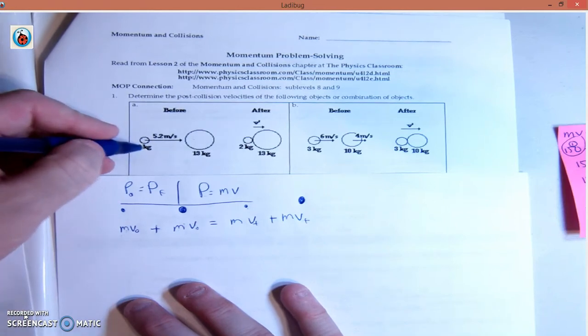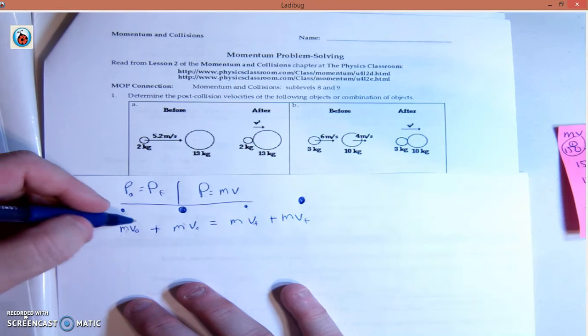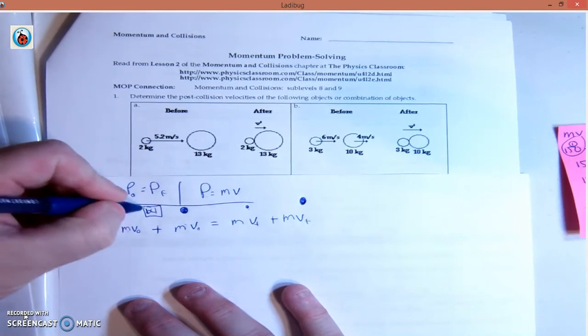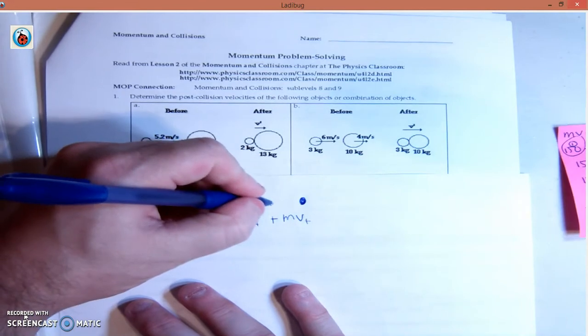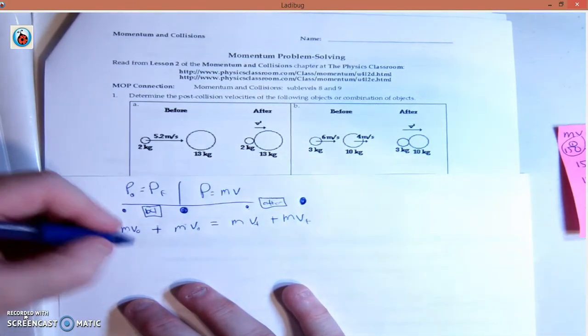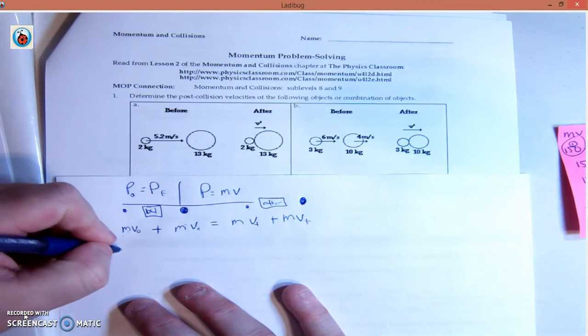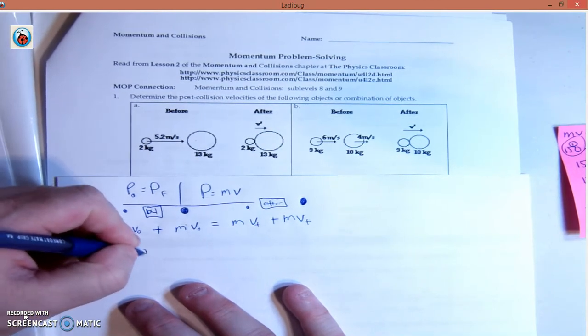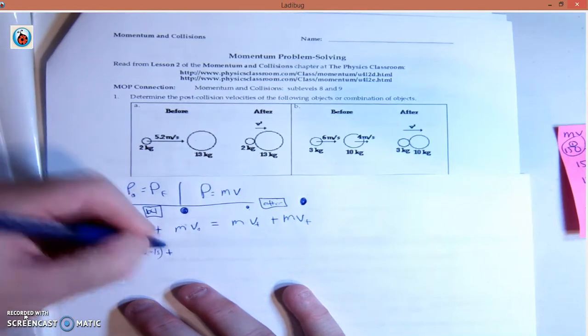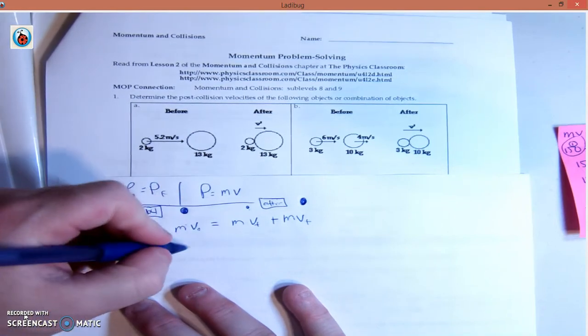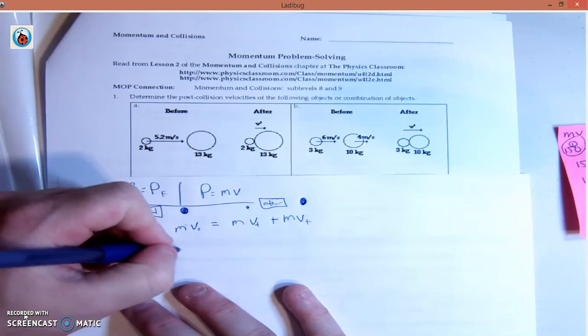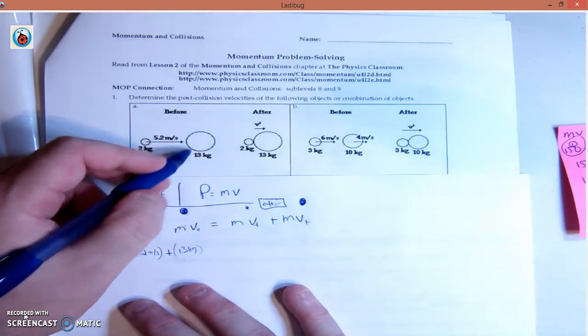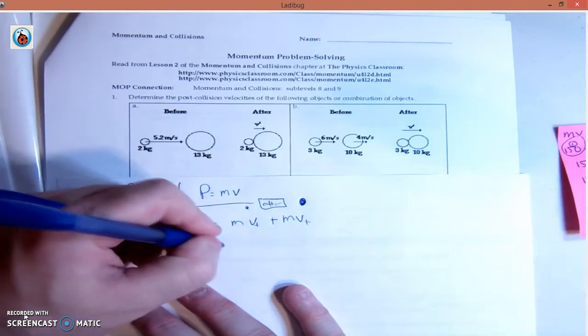Let's see what we got. Anytime it says kilograms, that means mass. This is the before side. Plug and chug. Mass of the small one, 2 kilograms. Velocity of the small one, 5.2 meters per second. Plus, mass of the big one, 13 kilograms. Velocity is zero because it's not moving.